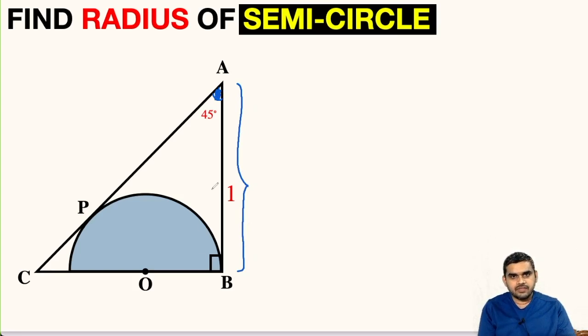So now if we see here in triangle ABC, angle A is 45, angle B is 90 degrees. So angle C will be 180 minus 90 minus 45, which is 45 degrees. So this is an isosceles triangle. That means AB will be equal to BC. AB is given to us, so this will also be one unit. This entire length is also one unit.